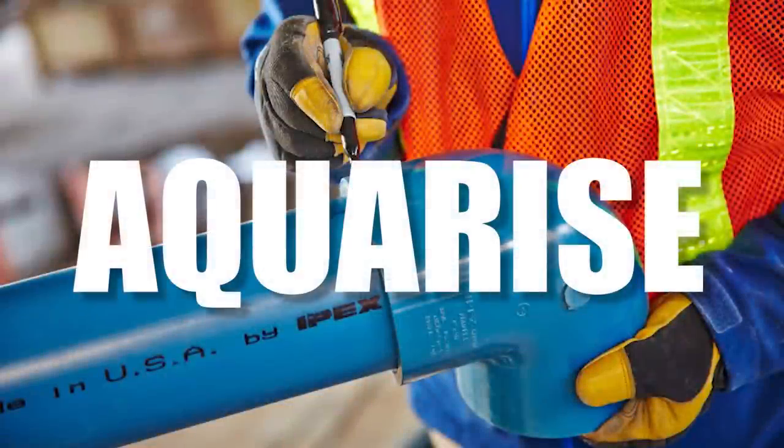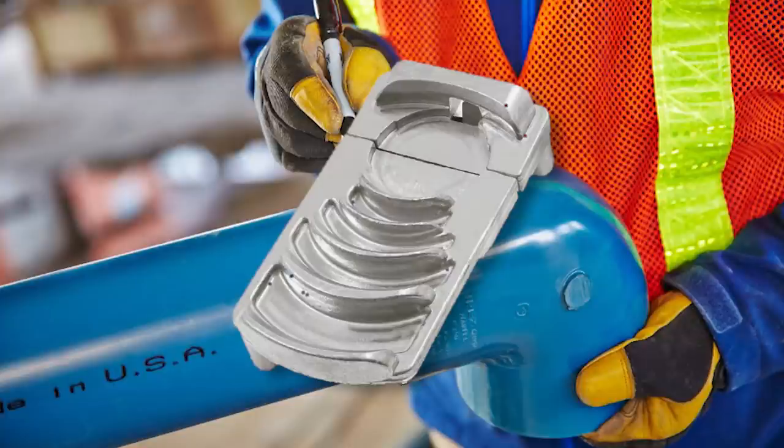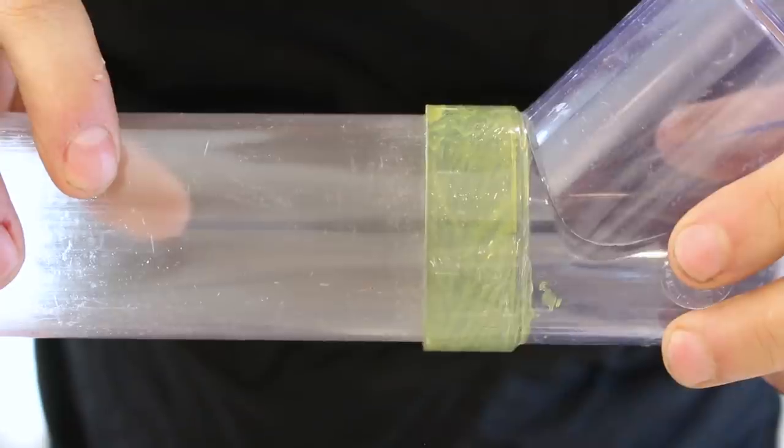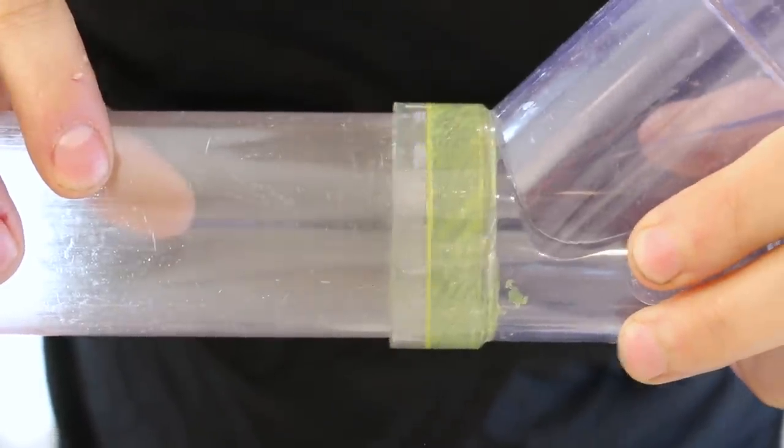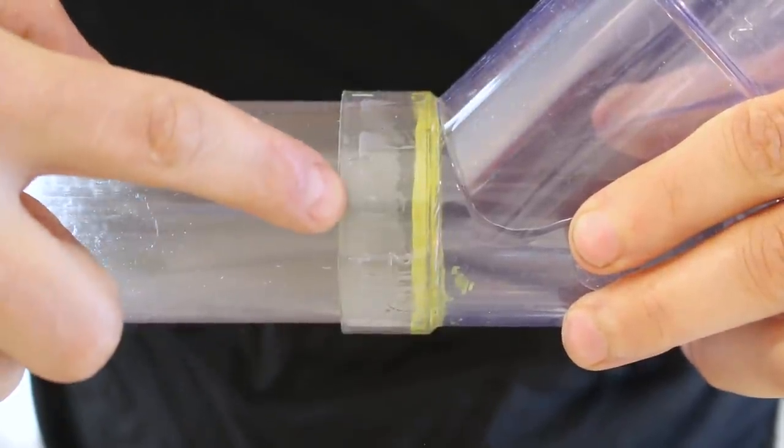Some plastic water distribution systems, such as AquaRise, ask that the outer edge is chamfered to be code, as to not push all the glue onto the fitting and have dry spots that could cause leaks.